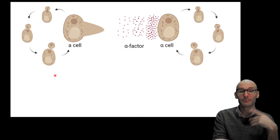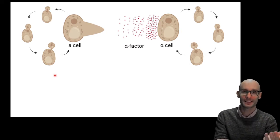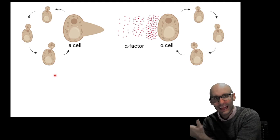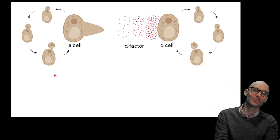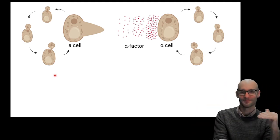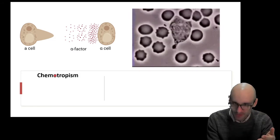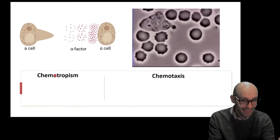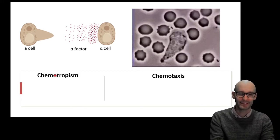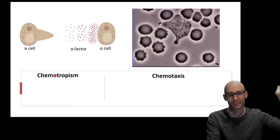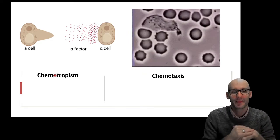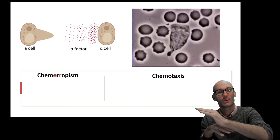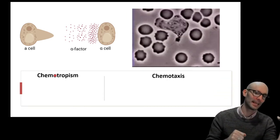Now, while that's happening, the reverse is happening. The alpha cell is releasing alpha factor that's binding to receptors on the A cell, and the A cell starts to grow towards the alpha cell. So this is called chemotropism, and chemotropism is a growth. Chemotaxis is a movement, like a taxi. You call the taxi, call the Uber, that's a chemotaxis. And again, you can have positive chemotaxis going towards, negative chemotaxis going away.